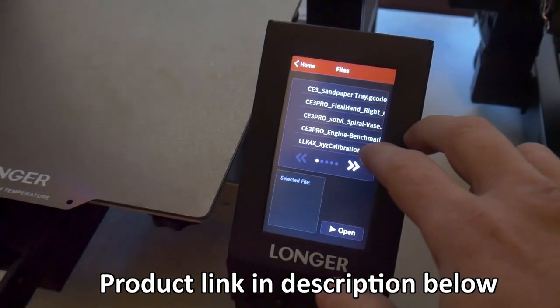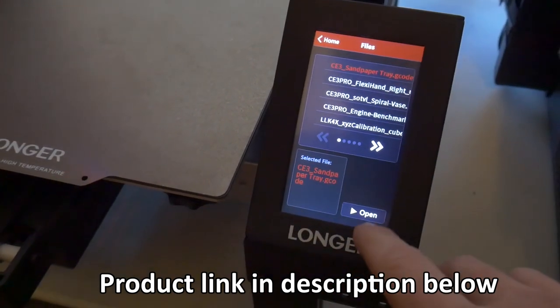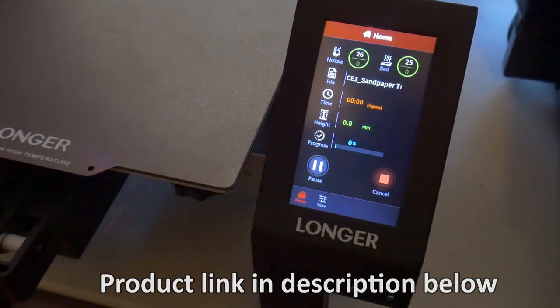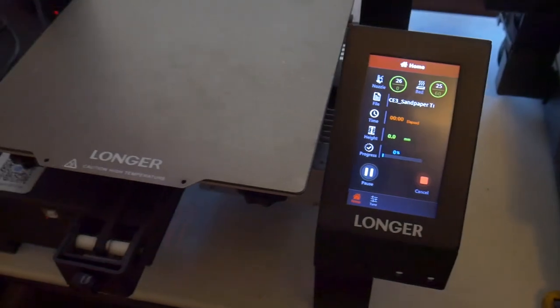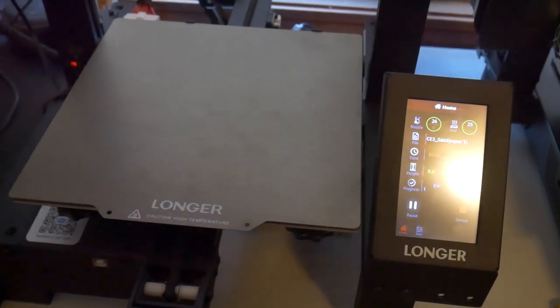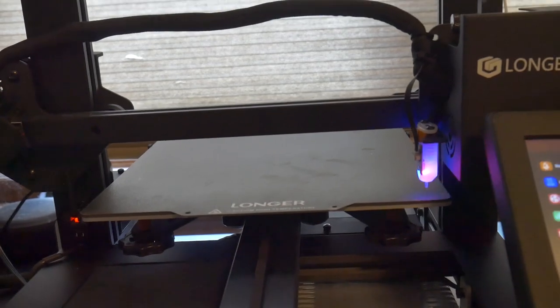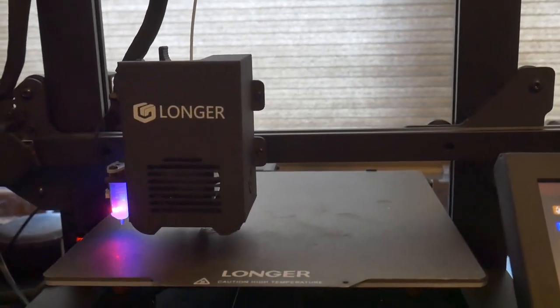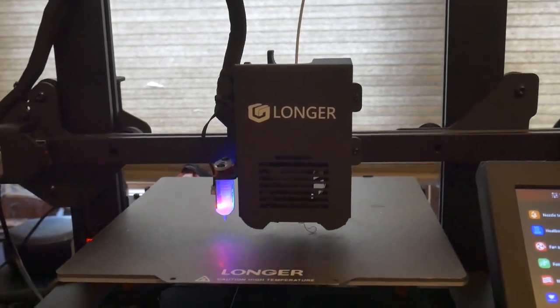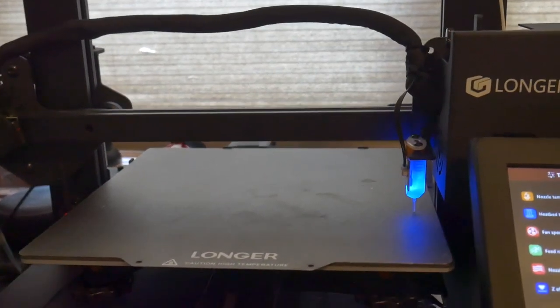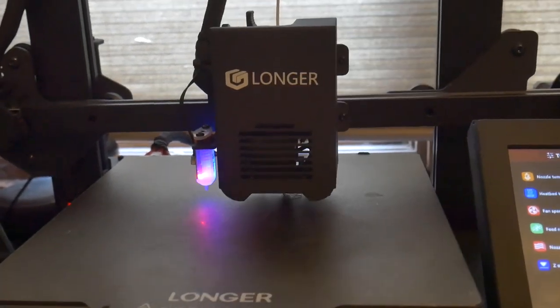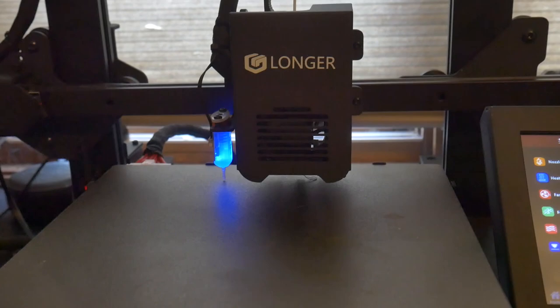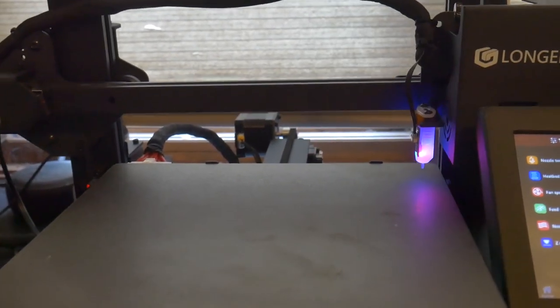Some of those features include a filament runout sensor, automatic bed leveling, a PEI coated spring steel print bed, silent stepper motors, a direct drive extruder, and a 3.5-inch full color touch screen interface. This printer is really good and it's a great value. If you'd like to learn more about this printer, I'll link a review video up in the cards and leave a link down in the description where you can find out more and possibly buy one of your own.